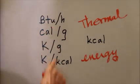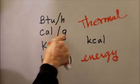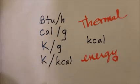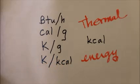And then we're given five choices: British thermal units per hour, calories per gram, kelvins per gram, kelvins per kilocalorie, and kilocalories.